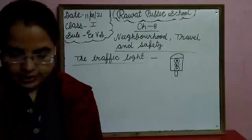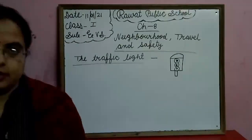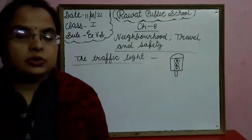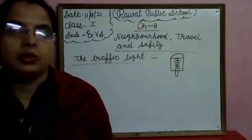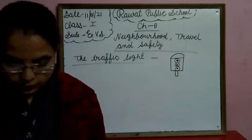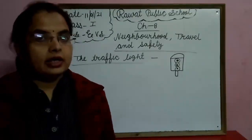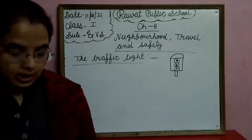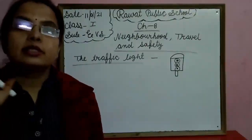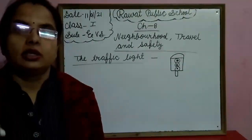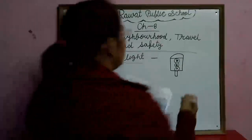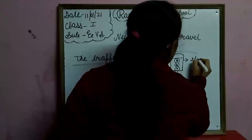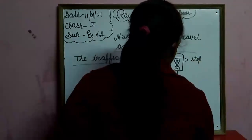Read what the three lights of the traffic light say। Traffic light में three lights होती हैं, हर light का अलग-अलग meaning होता है। तो red light का क्या mean होता है? Red light, red light, what do you say? I say stop away. Red light का mean होता है — Stop. S-T-O-P, stop.